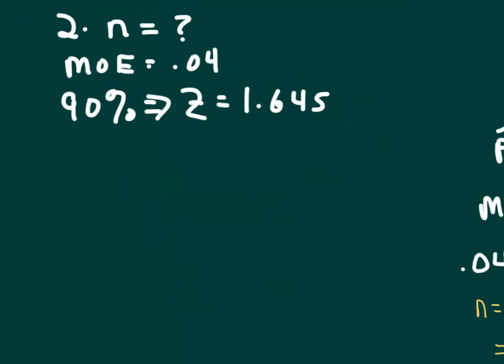Okay, so now in the second problem here, again, it's a problem asking for sample size. This time it says that we have a margin of error of 0.04, and that we want to do a 90% confidence interval, so we'll get z is equal to 1.645.